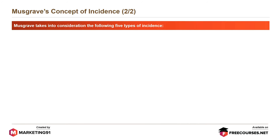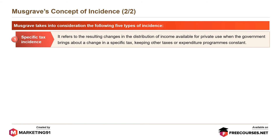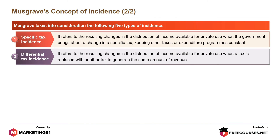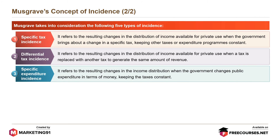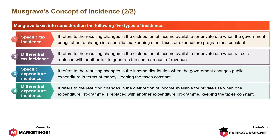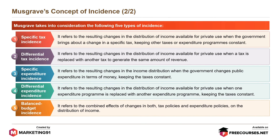Musgrave takes into consideration the following five types of incidence. Specific tax incidence refers to the resulting changes in the distribution of income available for private use when the government brings about a change in a specific tax, keeping other taxes or expenditure programs constant. Differential tax incidence refers to the resulting changes in the distribution of income available for private use when a tax is replaced with another tax to generate the same amount of revenue. Specific expenditure incidence refers to the resulting changes in the income distribution when the government changes public expenditure in terms of money, keeping the taxes constant. Differential expenditure incidence refers to the resulting changes in the distribution of income available for private use when one expenditure program is replaced with another expenditure program, keeping the taxes constant. And lastly, balanced budget incidence refers to the combined effects of changes in both tax policies and expenditure policies on the distribution of income.